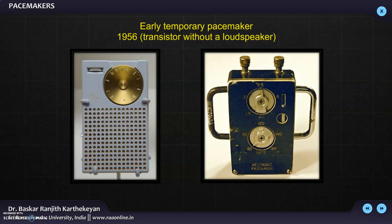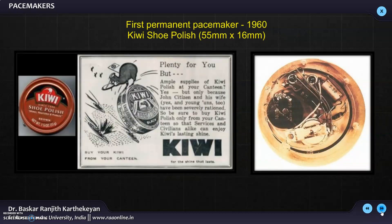The circuit in the pacemaker required a specific dimension. The dimension required for a temporary pacemaker circuit matched that of a transistor. So what they did was remove the loudspeaker inside the transistor and place the circuit of the temporary pacemaker so it could fit in the space. It was called a transistor without a loudspeaker. The dimension required for the circuit of a permanent pacemaker was around 55 by 16 millimeters, and they were looking for some mechanical casing to hold the circuit — and that's when the kibishu polish came, which had the same dimension.